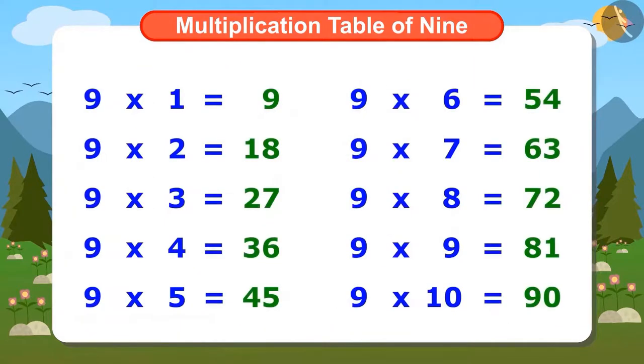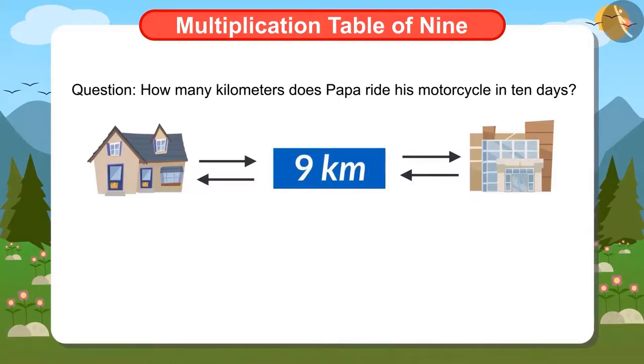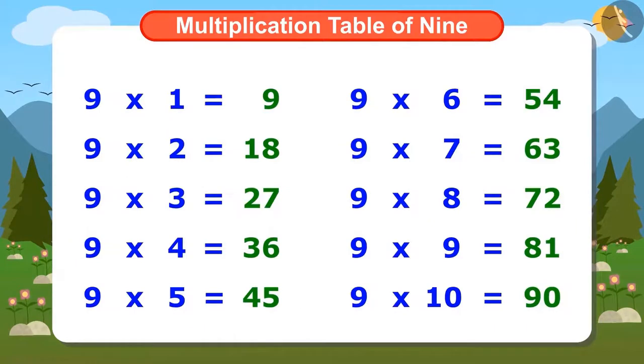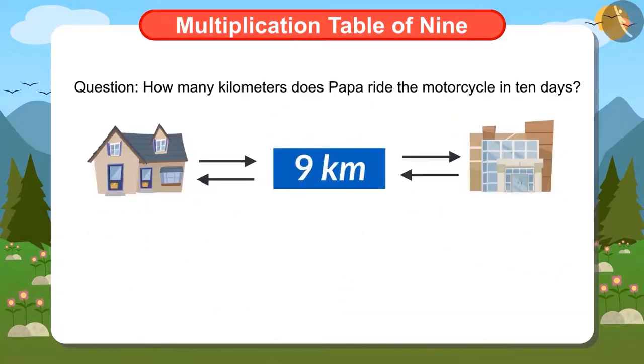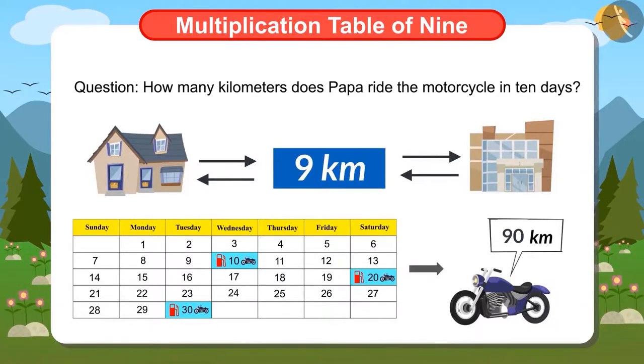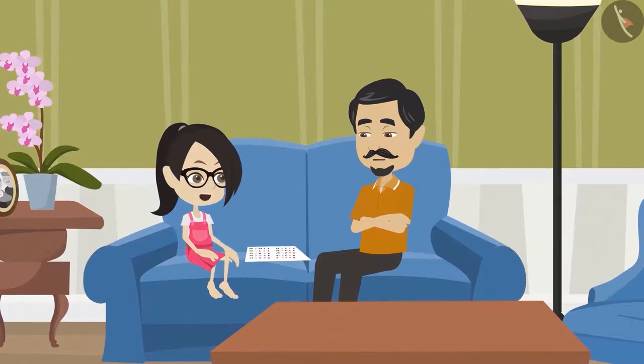Vandana has written the entire table of 9. Now she can tell papa how many kilometers her father drives the motorcycle in 10 days if he rides it for 9 kilometers per day. Can you answer this question by looking at the table of 9? You are absolutely right. For this, we have to find the answer of 10 times 9. And looking at this table, we can tell that the answer of 10 times 9 is 90. That in 10 days, her father rides his motorcycle for 90 kilometers if he rides 9 kilometers every day. Let us tell papa. Papa, you ride 90 kilometers in 10 days.